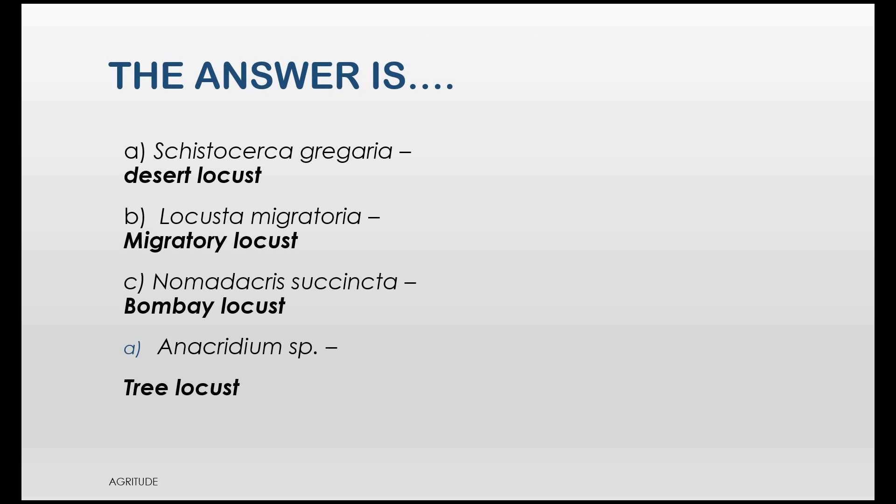Yes, the scientific name of desert locusts is Cystocerca gregaria. If you answered that right, congratulations. And others are Locusta migratoria is a migratory locust and Nomadacris succinata is a Bombay locust. And Anacardium species is a tree locust.